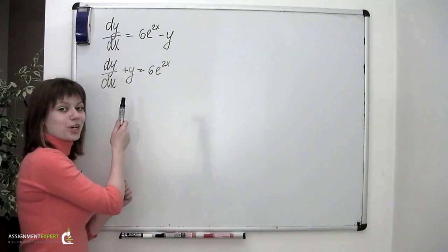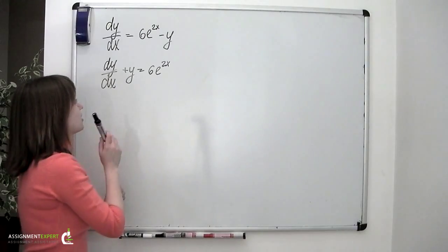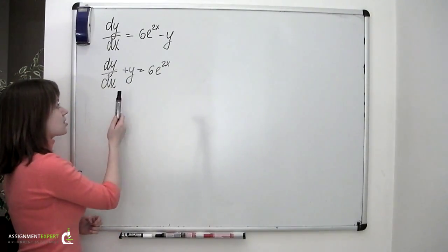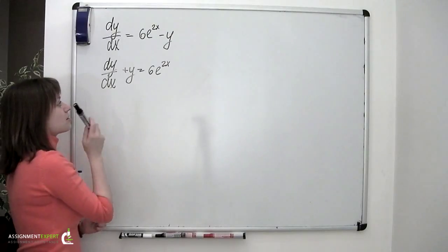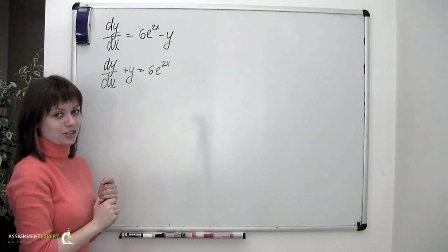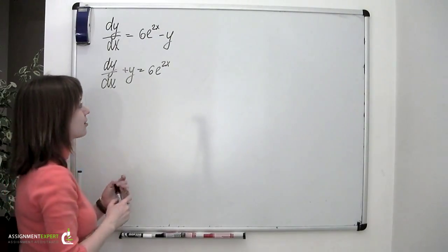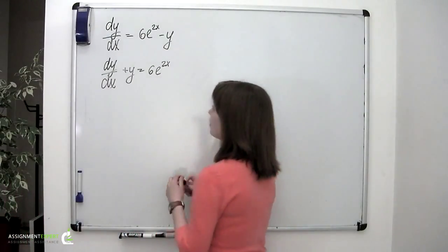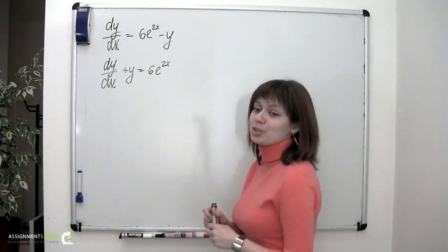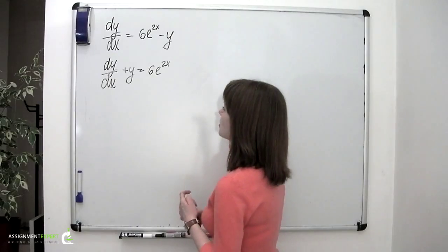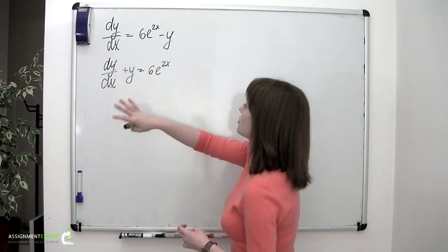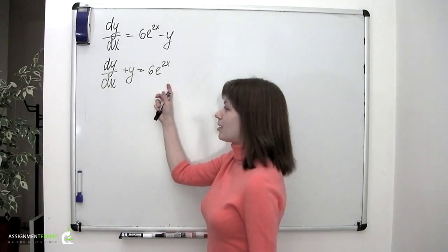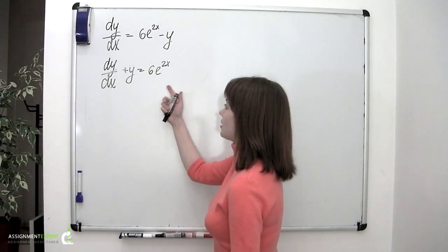This equation we are dealing with is the inhomogeneous first order linear constant coefficient ordinary differential equation. Let's explain what that means. Inhomogeneous means that the equation's right hand side isn't equal to 0, and we can see that it isn't.